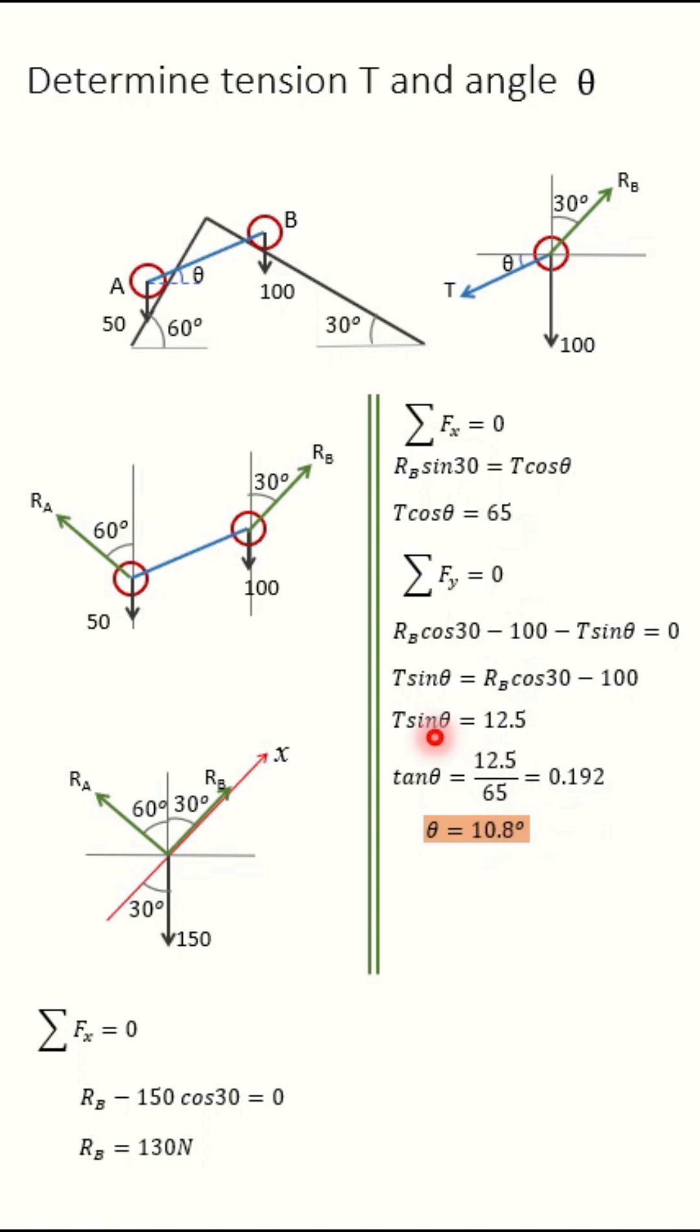Put this value of theta in this equation or in this equation, you will get T is equal to 66.7 N. Thank you.